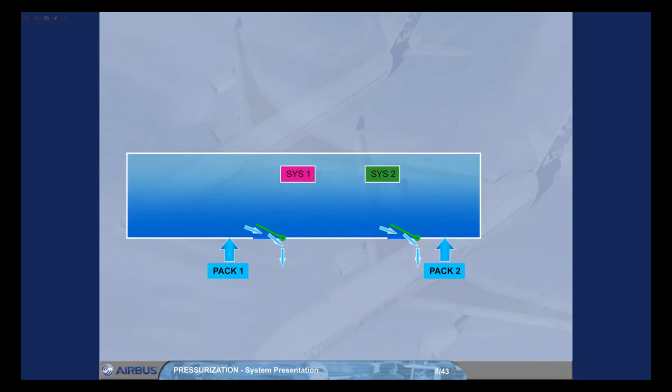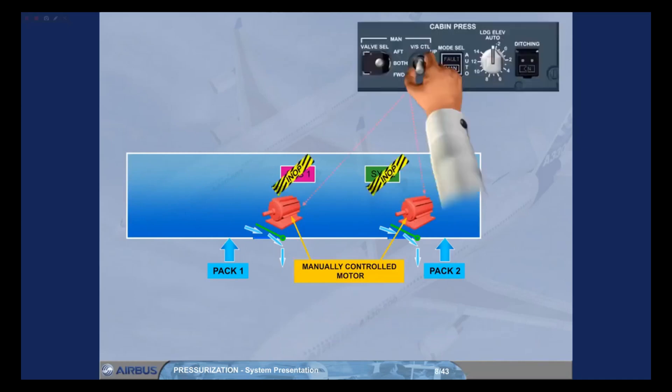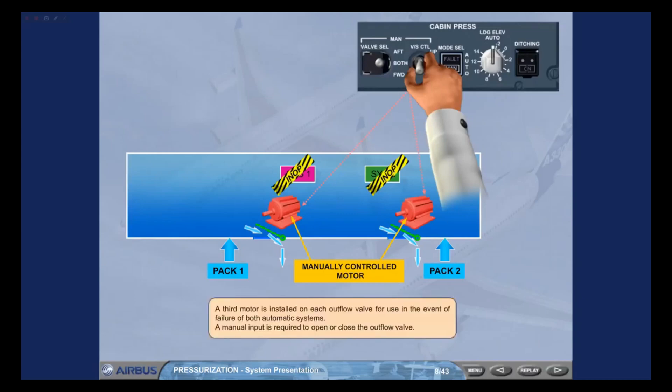A third motor is installed on each outflow valve for use in the event of failure of both automatic systems. A manual input is required to open or close the outflow valve.